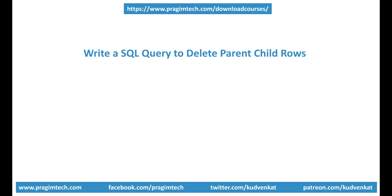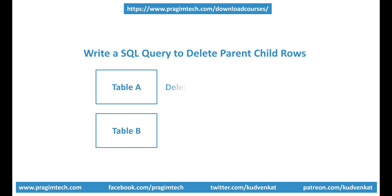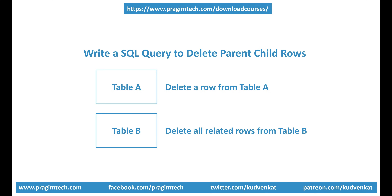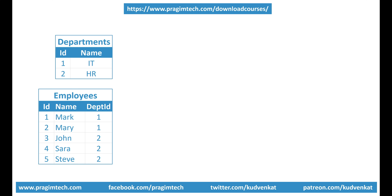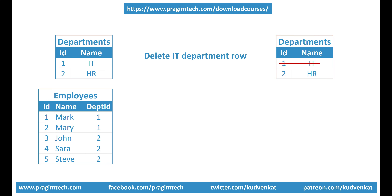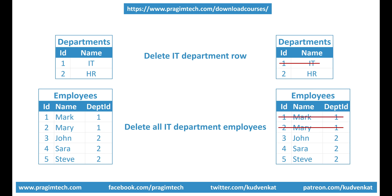The question in the interview goes like this: we have two tables, table A and table B. If I delete a row from table A, all the related rows in table B must also get deleted. How do we achieve this in SQL Server? To give it a bit more context and clarity, instead of table A and table B, let's use departments and employees tables. When a row from the departments table is deleted, all the related rows from the employees table must also be deleted. For example, if we delete the IT department row from the departments table, we also want all the employees of the IT department to be deleted from the employees table as well.